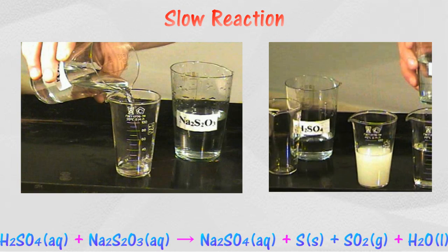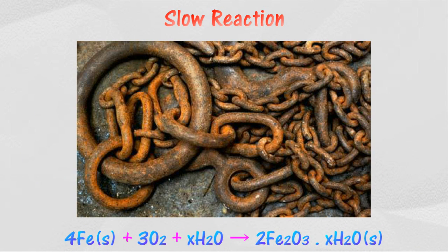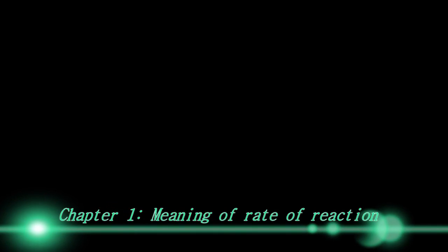Green plants carry out photosynthesis to release oxygen. Reaction of rusting on iron also occurs slowly. Thank you for taking time to watch this.